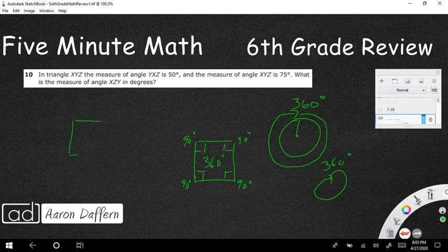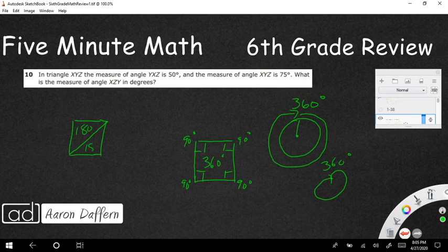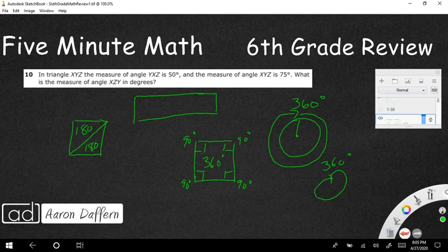The reason that's going to help us is because we know that a triangle is half a square. So if the whole thing is 360, that means we're going to split 360 in half. That's how we know that every single triangle is 180.